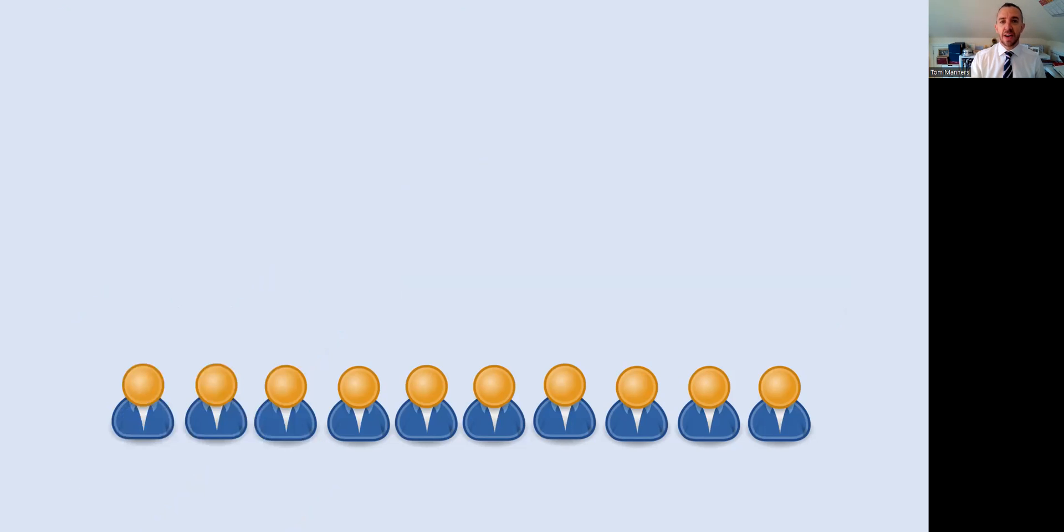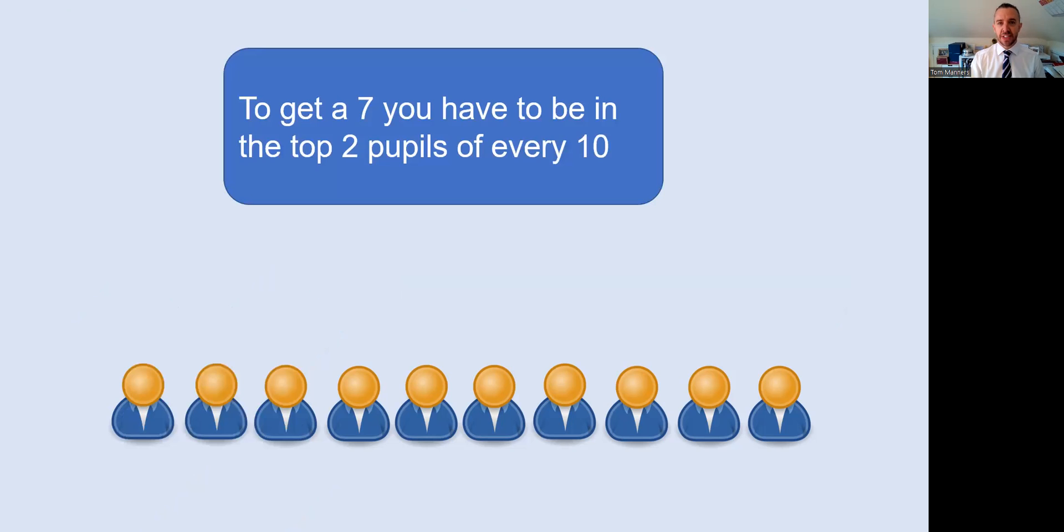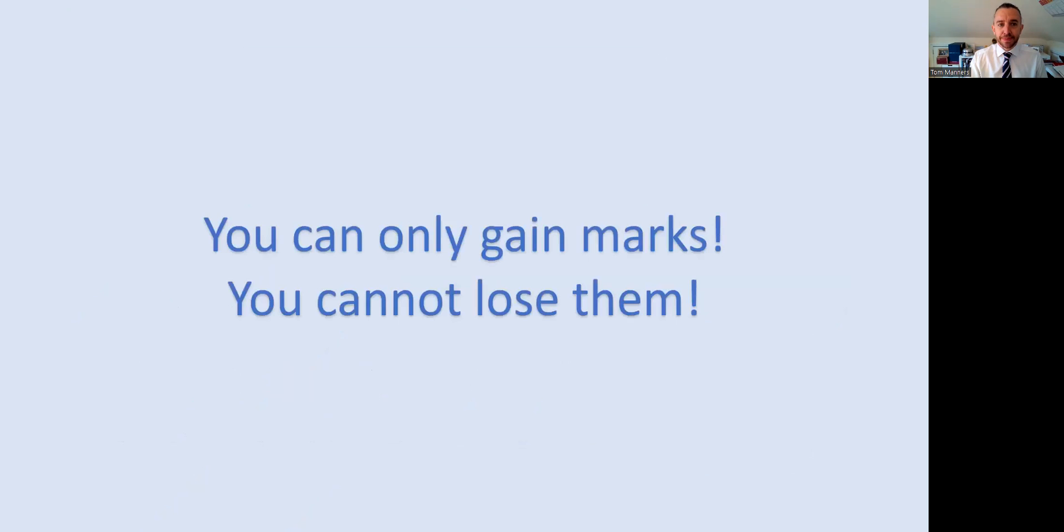By the way, if you're aiming higher, good on you. To get a seven, you've got to be in the top two pupils of every ten. So it's about beating the other eight pupils. This is an attitude you've got to remember: Everyone, when they start their exam, goes in with zero marks. You can only gain them. You can't lose marks. You can't go into negative marks. So how do you gain marks? That's the point of these 15 minutes.